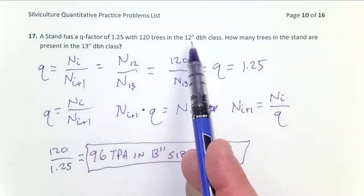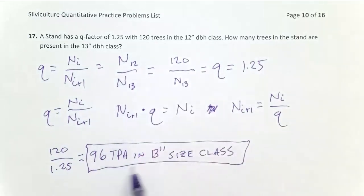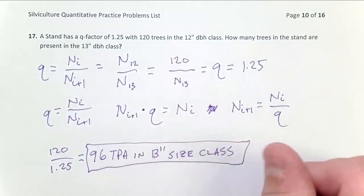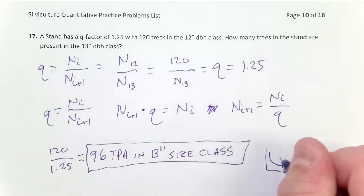My smaller trees, my 12-inch trees, I have 120 of them. My larger trees, my 13-inch trees, I only have 96. That's fewer trees because our reverse J-shaped curve means you get fewer and fewer bigger trees. So that checks out, that makes sense. That's a good way to make sure I did my math correctly.